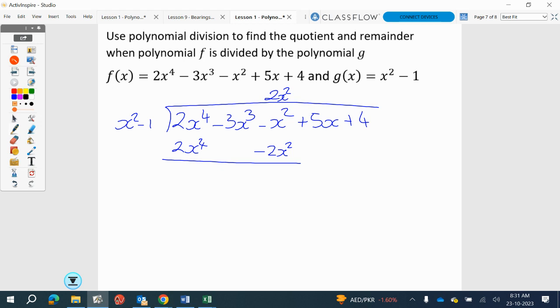So these ones are going to cancel but we need to drop this one down, minus 3x cubed. And then we've got minus x squared minus minus, so this is going to be plus x squared. Now we need to drop down the next term, we get plus 5x.